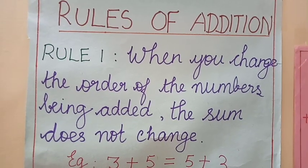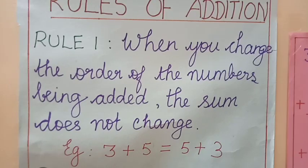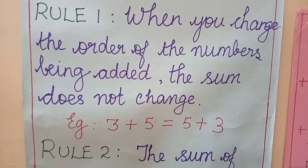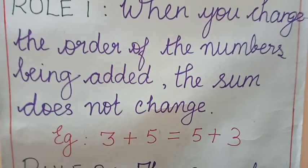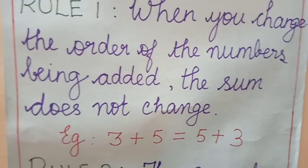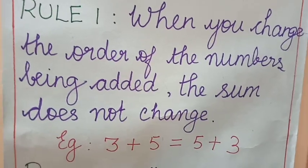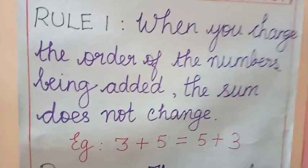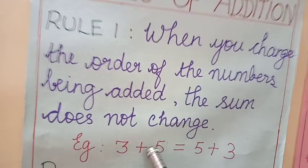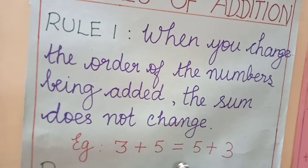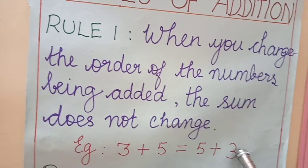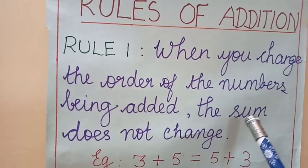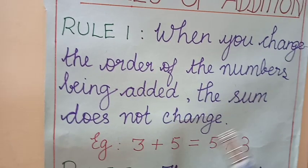Our next topic is Rules of Addition. Rule 1: When you change the order of the numbers being added, the sum does not change. For example, when you add any two numbers — 3 plus 5 or 5 plus 3 — the sum remains the same. When you add 3 plus 5, we get 8. When you add 5 plus 3, your answer will also be 8. So according to the rule, when you change the order of the numbers being added, the sum does not change.